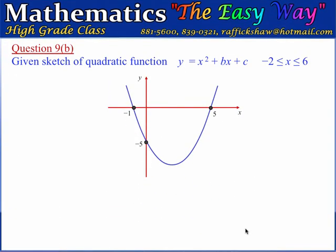Question 9b gives us this quadratic function y equals x squared plus bx plus c, over the interval negative 2 to 6 — that's the domain. This is a graph of that quadratic function. We are given the intersection with the x-axis and the intersection with the y-axis, and we are required to calculate the values of b and c.